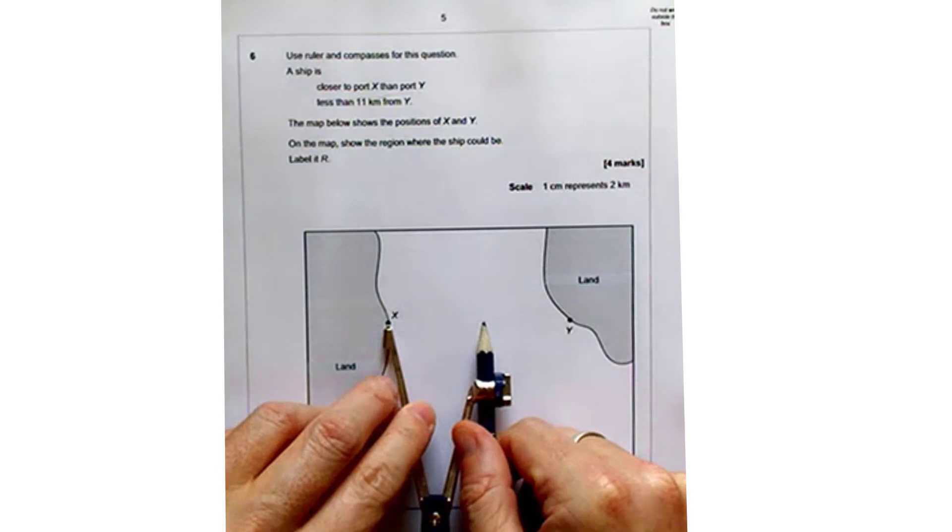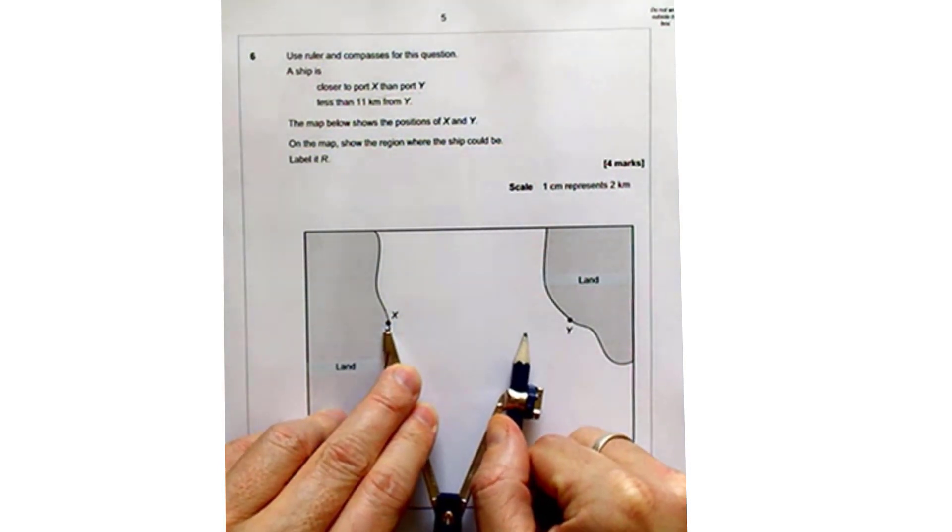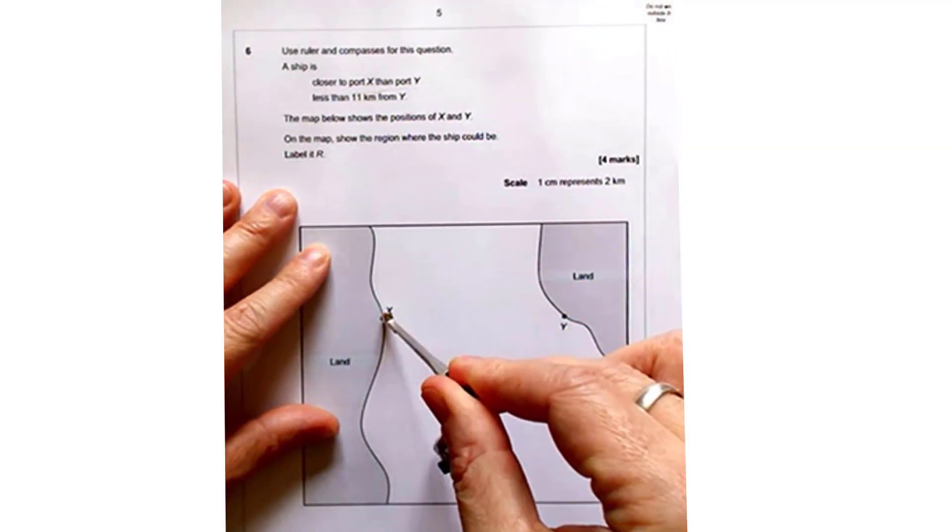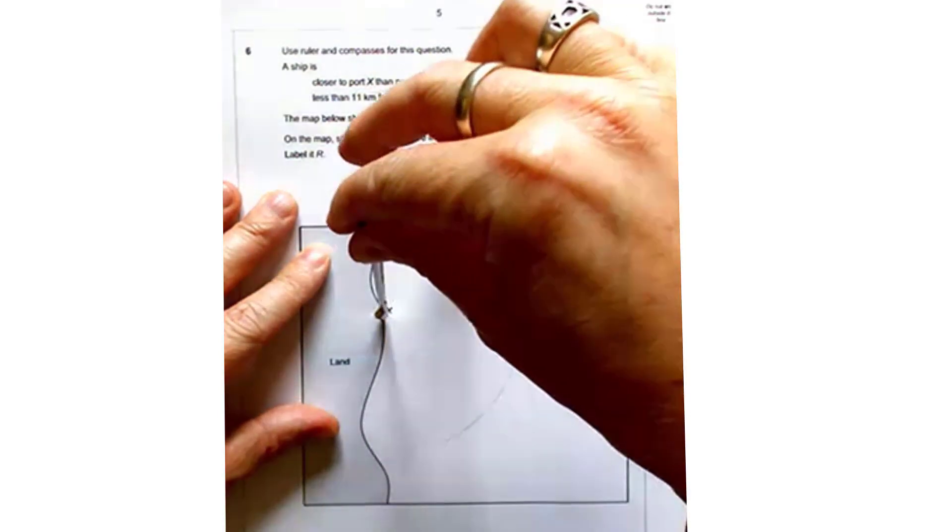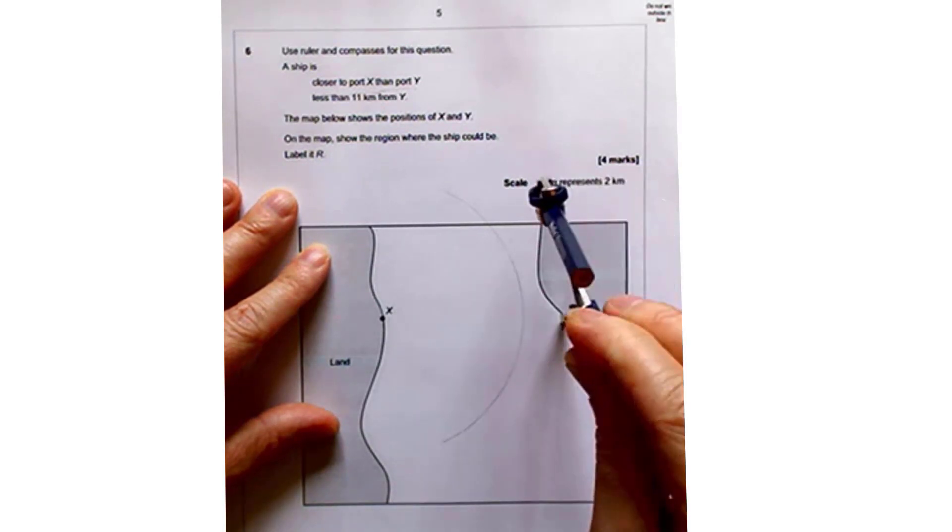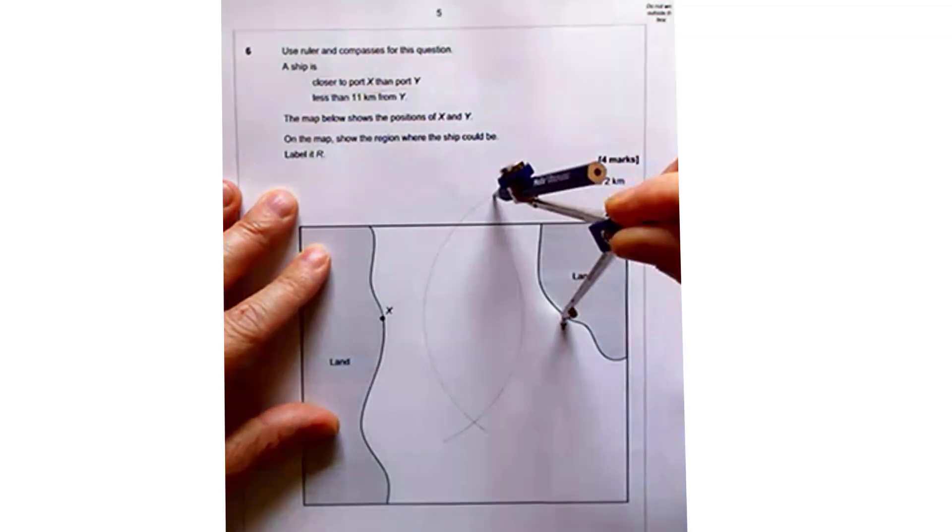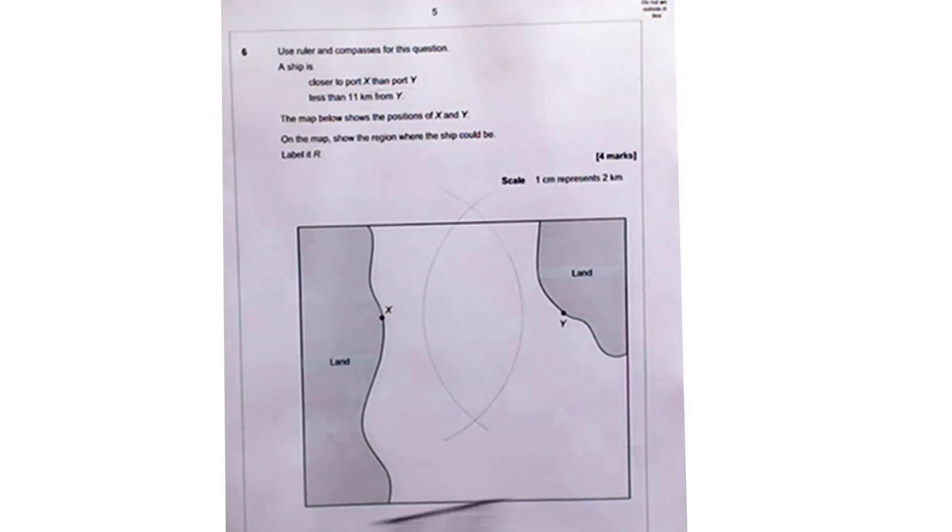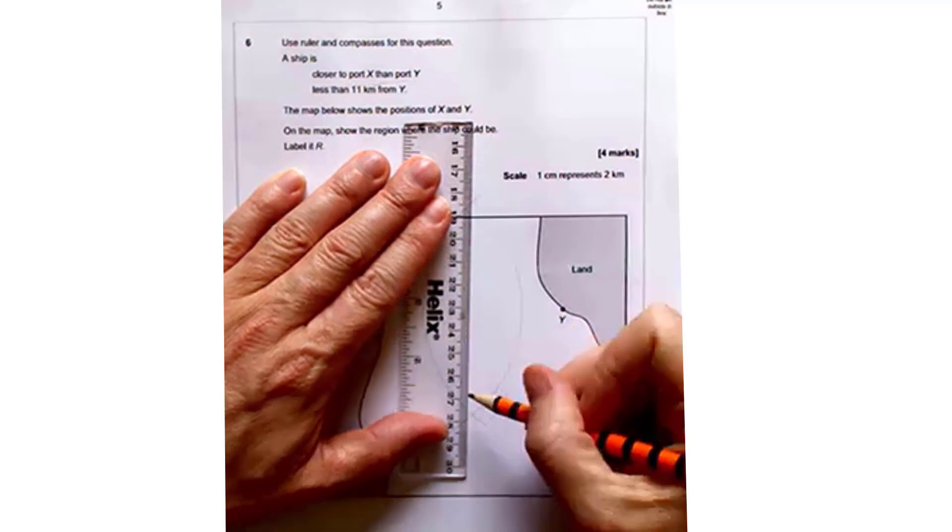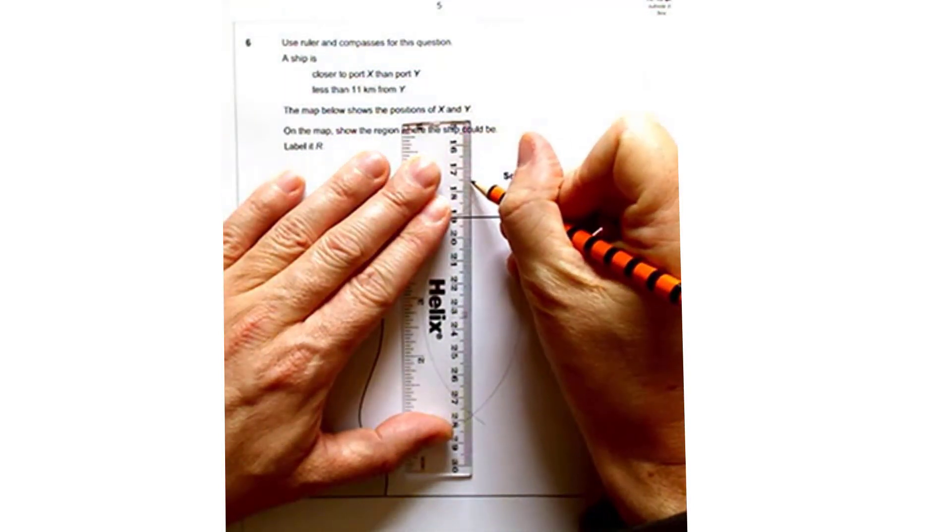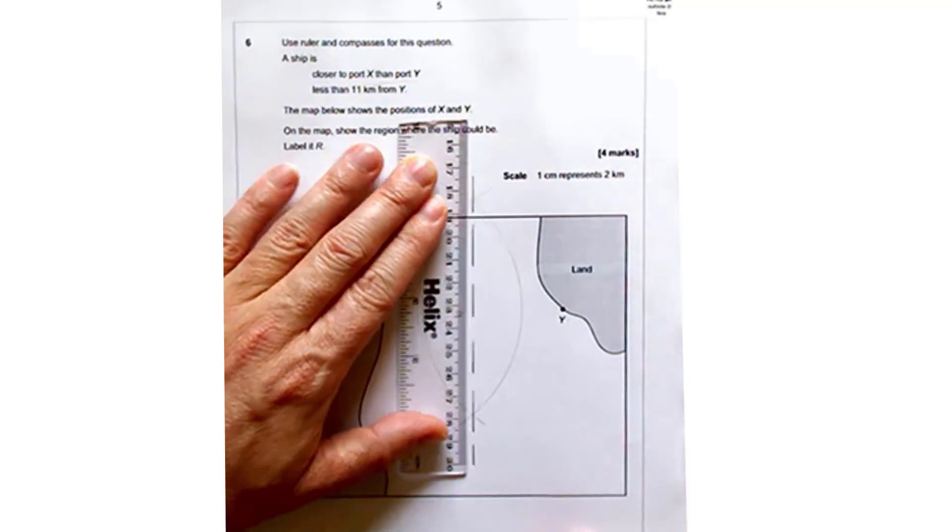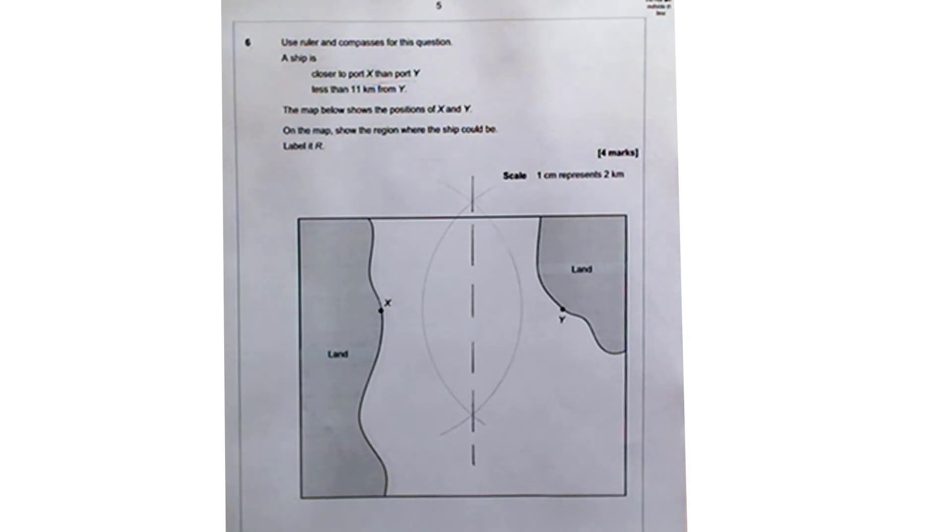To form a perpendicular bisector, we set our compasses to more than half of the distance between the two points. And we draw an arc from X, and an arc from Y, and you should notice that these two arcs cross at two points. So with our ruler, we're going to line up our ruler with those two points of intersection, and draw on our perpendicular bisector. Now all the points on this line are the same distance from X as they are from Y. So we're looking for the points to the left of that line then, so that they're close to X and Y.